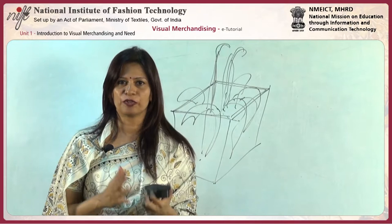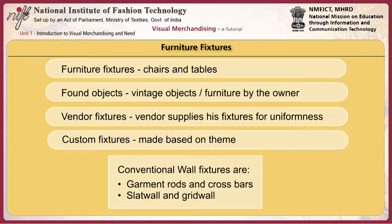Furniture fixtures are the chairs and tables present in the store. Found objects are vintage objects or furniture owned by the store owner and brought into the store. Vendor fixtures are supplied by the vendor for uniformity so that merchandise gets a prominent place in the store. Custom fixtures are made based on a theme — the designer provides the theme to the visual merchandising team who create custom design fixtures.